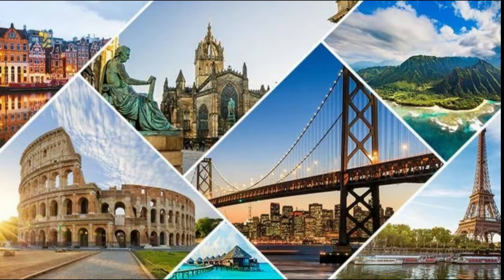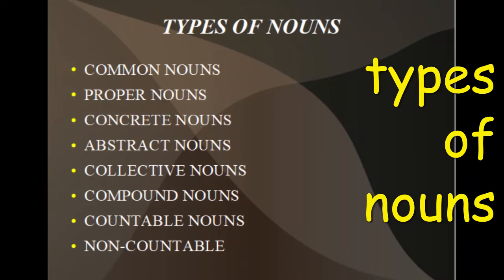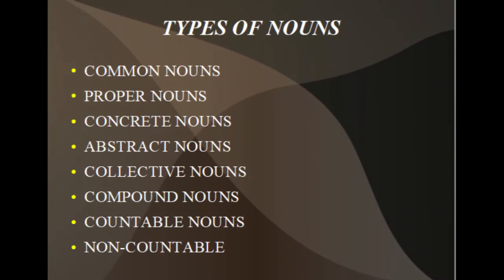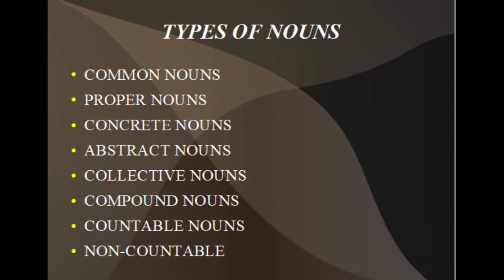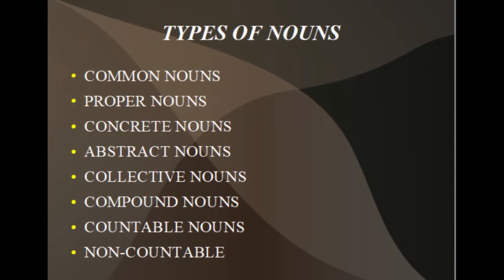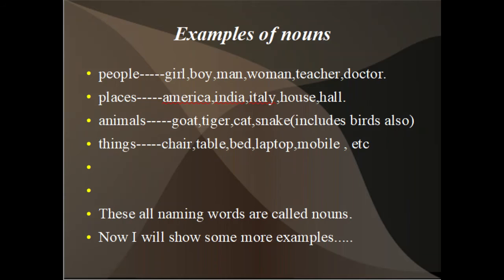Let us see some types of noun. They are: common noun, proper noun, concrete noun, abstract noun, collective noun, compound noun, countable noun, and non-countable noun. These eight are the types of noun — we will see briefly about them in the next video. Examples of people: girl, boy, man, woman, teacher, doctor — all refer to people.